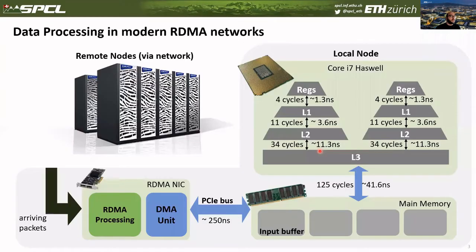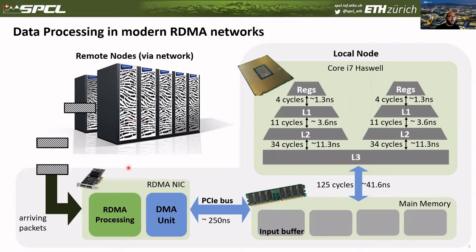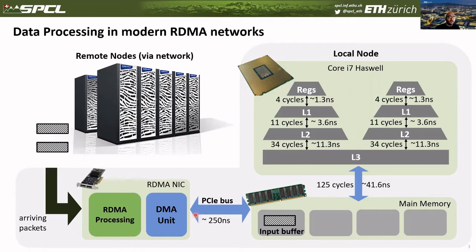A key technology to satisfy those requirements is RDMA, Remote Direct Memory Access. Here we have a compute node with an RDMA NIC, host memory, and the CPU complex. As we receive data from the network, the RDMA NIC processes it and copies it directly to the host memory into the application's specified buffers.